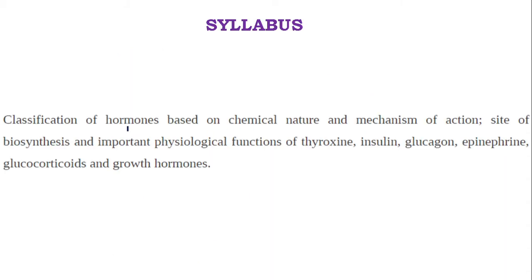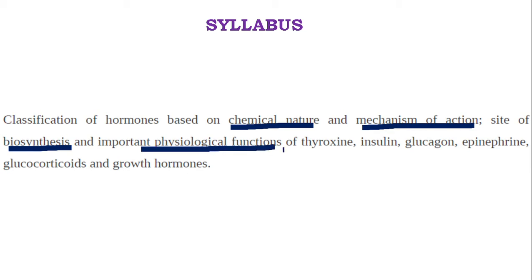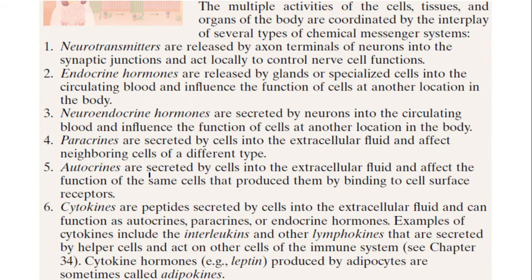This is the syllabus. We need to classify the hormones based on their chemical nature and also based on their mechanism of action, then the site of biosynthesis, then the important physiological functions of these many hormones. The different activities of the body are coordinated by different types of chemical messenger systems — chemical compounds produced in different parts of the body.